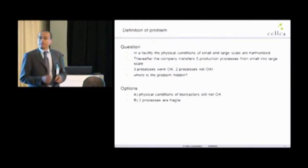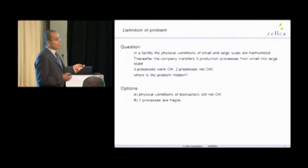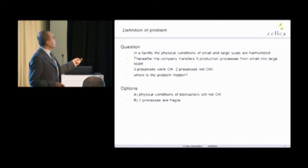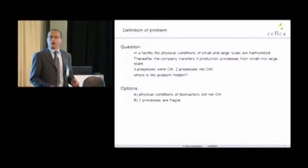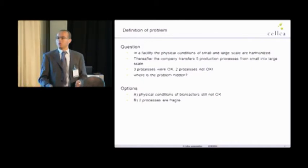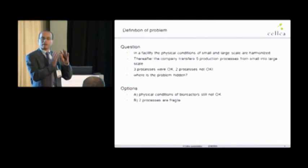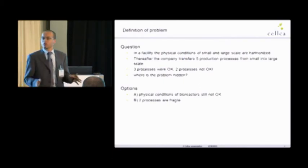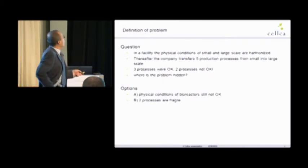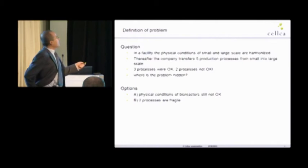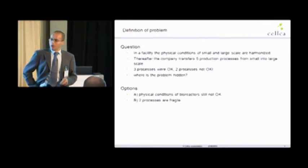Now I have prepared here case studies. Imagine in a facility, the physical conditions of small and large scale bioreactors are harmonized. I think everyone does it. Everyone who invests in a big facility does this work. And that is also work which can take a couple of weeks or months and then it is finished. All the data are in books and computers and you can use it. Thereafter, the company transfers five production processes from small scale into large scale.